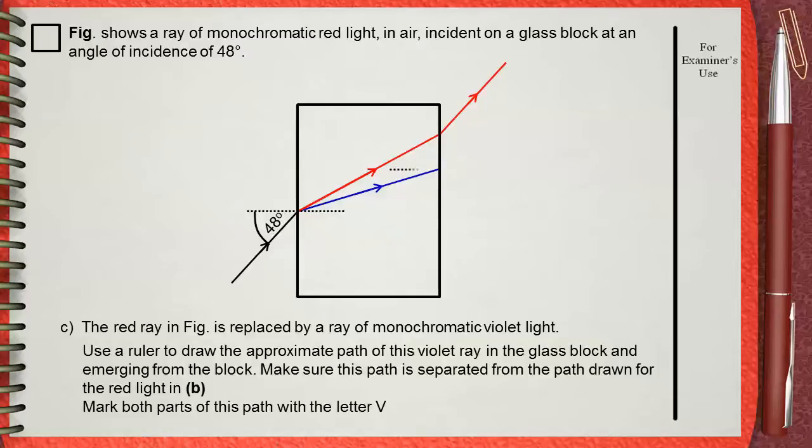So, this is our normal. And this is the extension if this light ray goes with no bending. This is how it will bend away from the normal. Make sure that this light ray will be parallel to the emerging red ray. And this will be how our diagram will look like.